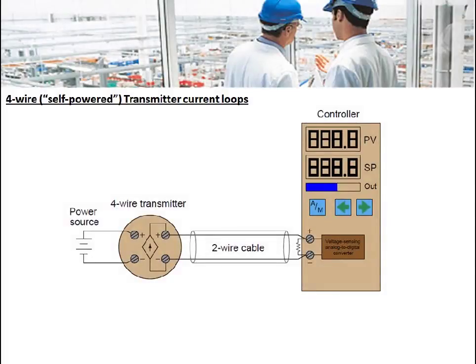This is how a 4-wire transmitter looks like. In some applications, some transmitters will not be able to operate by the 4 to 20 milliampere signal. In those cases, we will go for 4-wire where there are separate wires for power source and separate wires for transmitting the 4 to 20 milliampere signal.